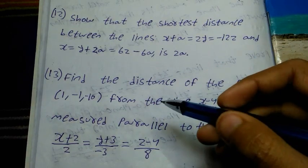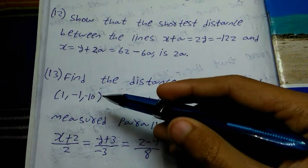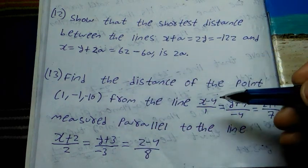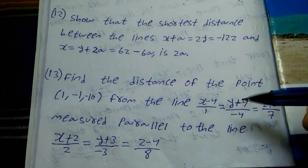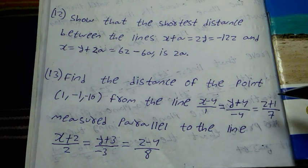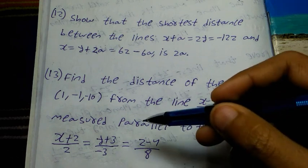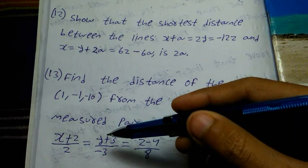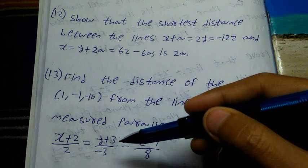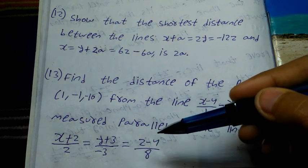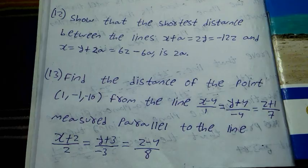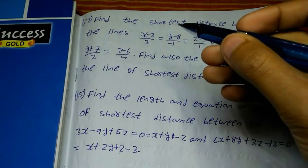Number 13 question: find the distance of the point (1, minus 1, minus 10) from the line (x minus 4)/1 equal to (y plus 4)/(minus 4) equal to (z plus 1)/7, measured parallel to the line (x plus 2)/2 equal to (y plus 3)/(minus 3) equal to (z minus 4)/8.